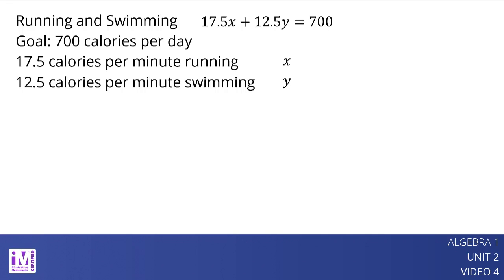We can reason that the more minutes he runs, the fewer minutes he has to swim to meet his goal. In other words, as x increases, y decreases. If we graph the equation, the line will slant down from left to right.